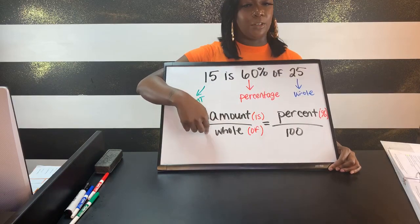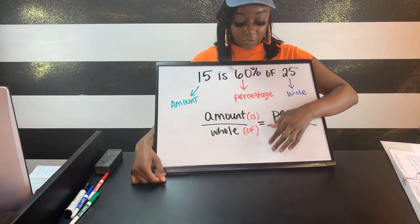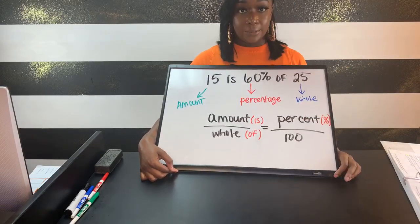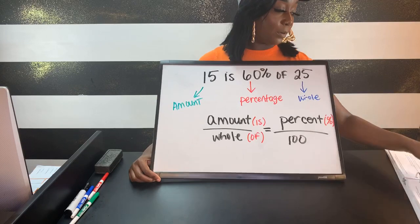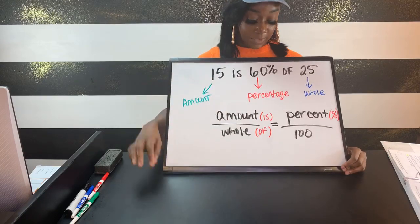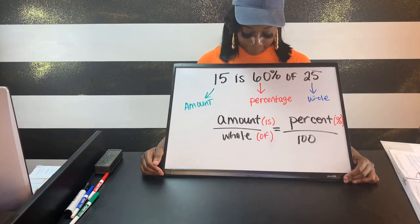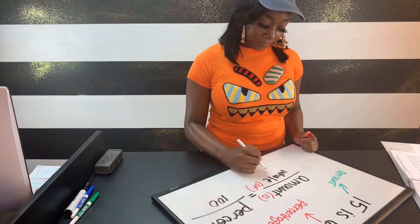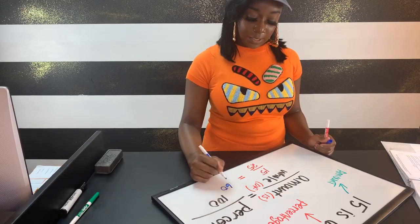The amount is a piece of something — if you have a total team of 25 players, that goes in the denominator, and however many players are specified goes on top. A shortcut people use: whatever comes before the word 'is' goes on top, whatever comes after the word 'of' goes on the bottom. I prefer using amount over whole to stay consistent. Whatever has a percent sign goes over 100. For this problem, the setup would be: 15 over 25 equals 60 over 100.